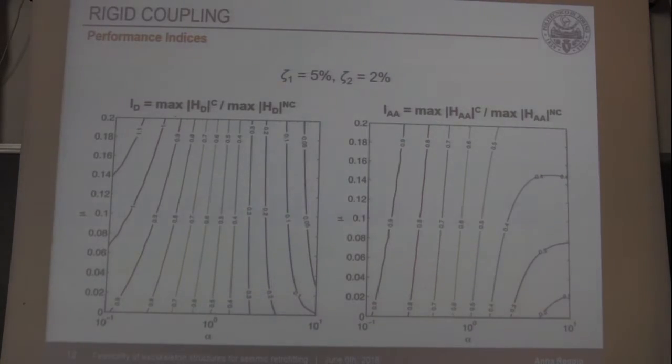With the aim of quantifying this effectiveness, we have defined two performance indices, one in terms of displacement and one in terms of absolute acceleration. Each performance index is defined as the ratio between the peak response in the controlled with respect to the uncontrolled configuration. Therefore, values smaller than one indicate control effectiveness of the exoskeleton. You can see that in a large portion of the parameter space, the exoskeleton is able to significantly reduce the seismic response of the main structure.